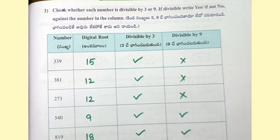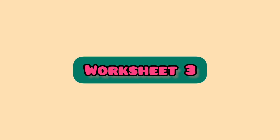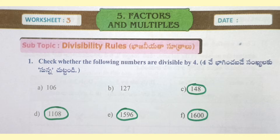339 — digital root is 15, so divisible by 3, not divisible by 9. 381 — digital root is 12, divisible by 3, not divisible by 9. 273 — digital root is 12, divisible by 3, not divisible by 9. 540 — digital root is 9, divisible by 3 and divisible by 9. 8819 — digital root is 18, so divisible by 3 and 9.